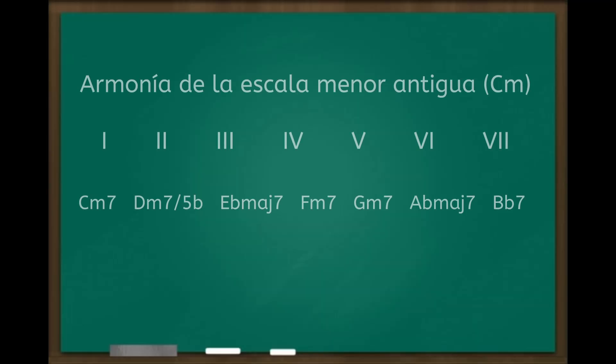La vamos a encontrar en los estándares y en un montón de música popular. Hoy nos vamos a centrar en el segundo quinto primero menor, y para esto vamos a convocar a tres escalas menores que son las tres escalas relativas menores de toda escala mayor: la escala menor antigua, la escala menor armónica y la escala menor bachiana, también conocida como escala menor melódica ascendente. Vamos a poner en un pizarrón la armonía que genera cada una para extraer de ahí el segundo quinto primero.